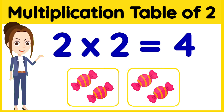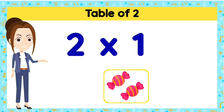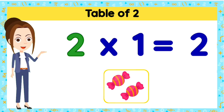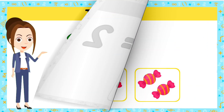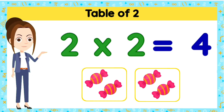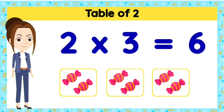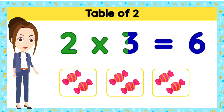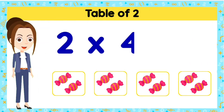Multiplication table of two. Come, let's learn the table of two. Two ones is two. Two twos are four. Two threes are six. Two fours are eight.